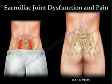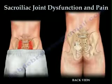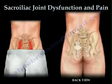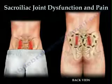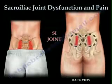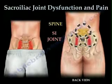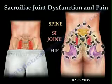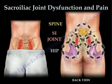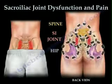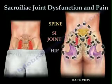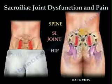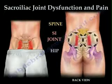Diagnostic injection of the sacroiliac joint is the only means to confirm diagnosis. Pain from the hip, spine, and SI joint can overlap and be associated. Patients can experience injuries associated with the spine and SI joint or the hip and SI joint. If the patient has a back sprain and it doesn't improve for several months, it is important to look at the SI joint.